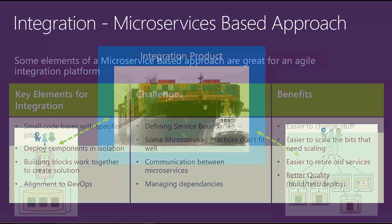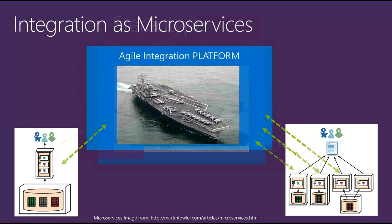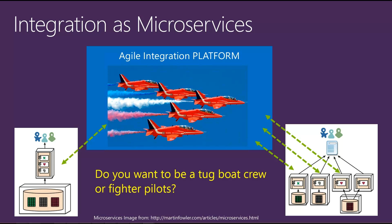How I pitched this at the summit was the idea that an integration team often gets viewed by other teams as being like a tugboat trying to manoeuvre a massive ship — slow and difficult to make happen, viewed as a roadblock. My idea was that if we've got an integration platform built in an agile manner using microservices principles, we can change this to be more like an aircraft carrier: a heavy, robust platform when we need it, but with jet fighters we can send out to deal with specific requirements — those jet fighters represent our microservices.